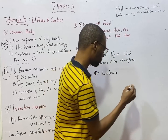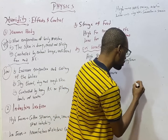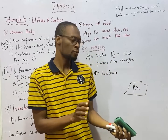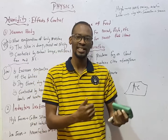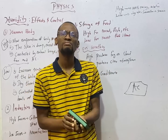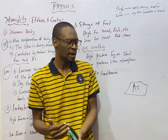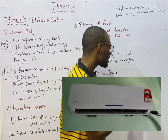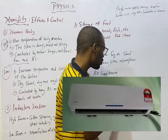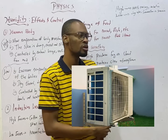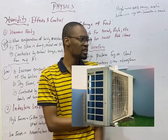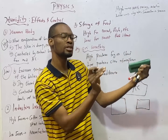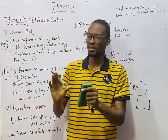An air conditioner works on the principle that the air outside must always be hotter than the air inside. In your homes, hotels, and apartments, for every air conditioner there is an indoor unit and an outdoor unit. Even if you are using a wall-mounted AC — the type where you put a hole in your wall — there is a part outside and a part inside.